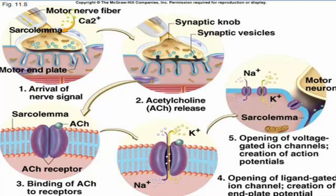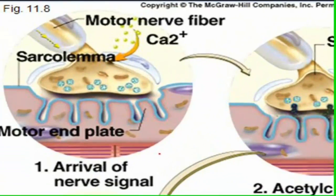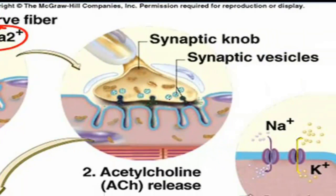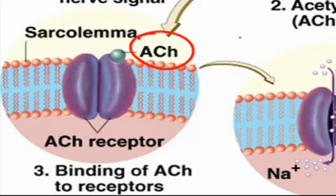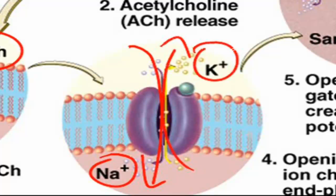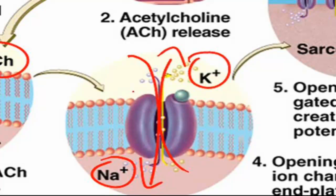Let's see the membranes close up and see what's happening. The arrival of the nerve signal from a motor neuron results in an influx of calcium ions into the synaptic end bulb. The calcium ions result in the exocytosis of the neurotransmitter from the synaptic vesicles into the synaptic cleft. Acetylcholine stimulates a receptor on an ion channel, causing the opening of ion channels and an influx of sodium and an outflux of potassium ions, generating a graded potential.